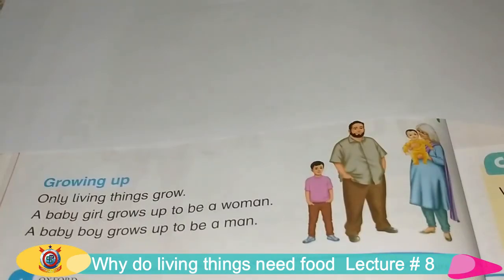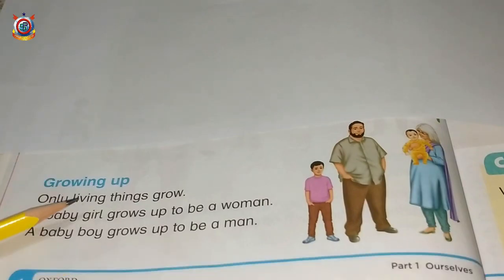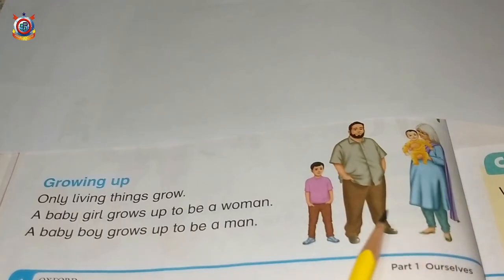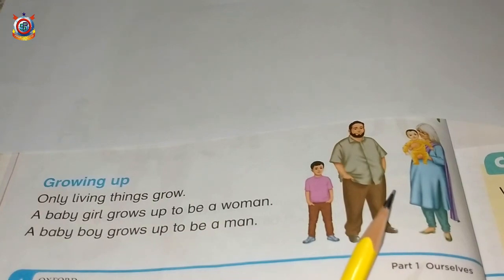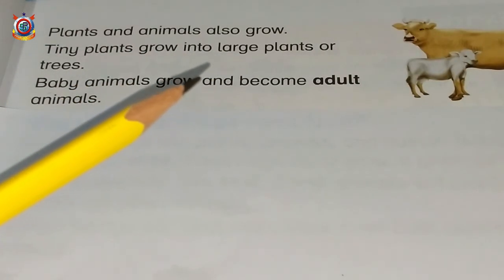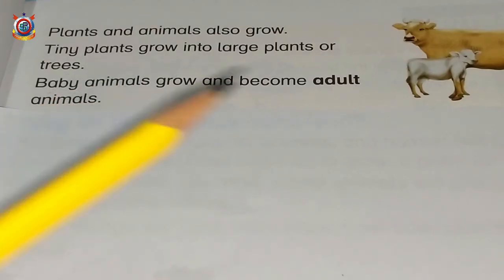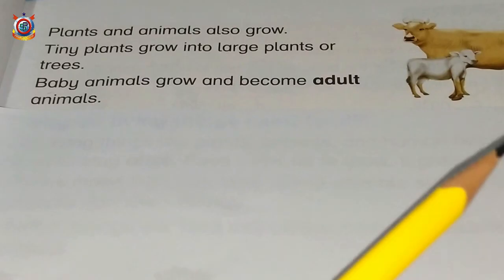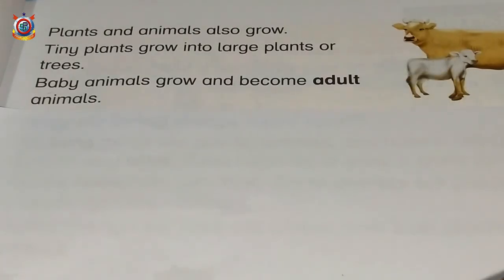Before starting our new topic, we will recall what we have studied in our previous class. Can anybody tell me what was our topic? Very good — Growing up! We studied that only living things grow, and a baby girl grows up to be a woman, and a baby boy grows to be a man. Excellent. We also learned that plants and animals grow too. Tiny plants grow into large plants, and baby animals grow into adult animals.